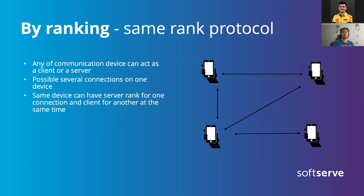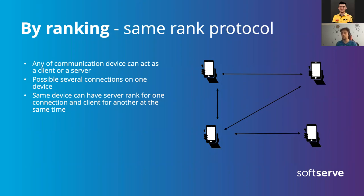The next communication type is same-rank, where applications connect to each other without a server. All of them have the same role in the communication, and each one can establish a connection. This is usually bidirectional communication. For example, Skype is normally client-server, but on video calls, if possible, Skype establishes a peer-to-peer connection — it's more secure, faster, and you don't need huge servers for it.